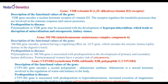Genetic studies are one of the most effective methods to assess risk factors and identify roots of existing problems. One of the important genes in this context is VDR. The VDR gene encodes a nuclear hormone receptor for vitamin D3. This receptor regulates the metabolic processes that are involved in the immune response and cancer processes.